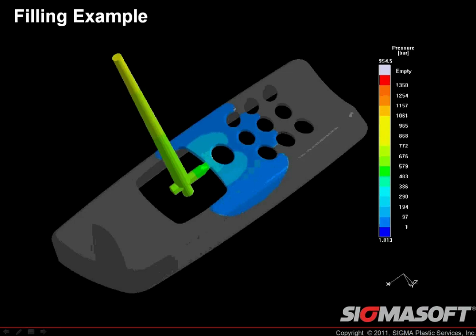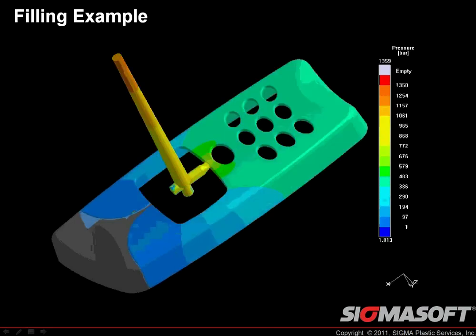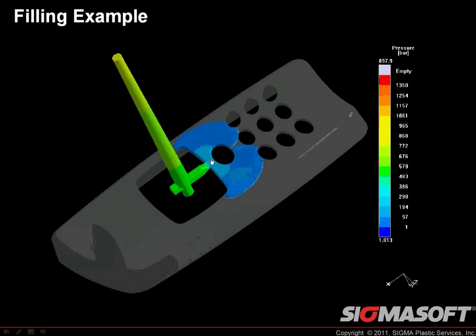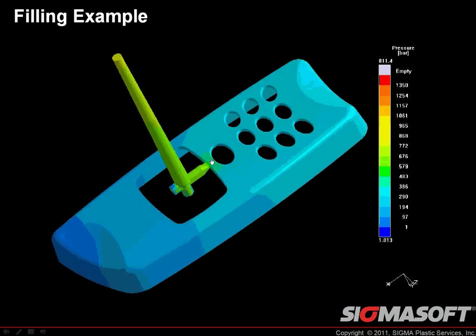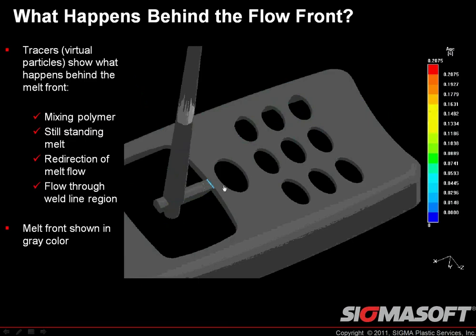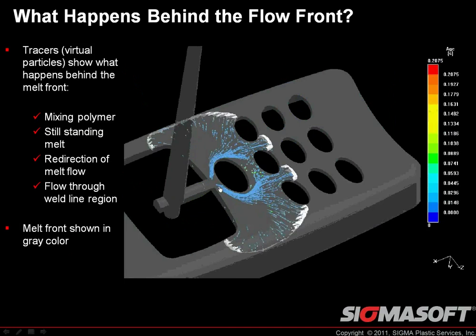Here's a typical filling example. In this case we're looking at pressure over time — watching the pressure increase through the sprue as it fills the part. One unique capability is what we call tracer particles: you can assign these virtual particles, typically at the gate or injection location, and then follow them through the entire process through the filling and packing phases. It's one thing to watch where the melt front goes, but it's also important to see what happens behind that melt front as polymer continues to flow through those areas.